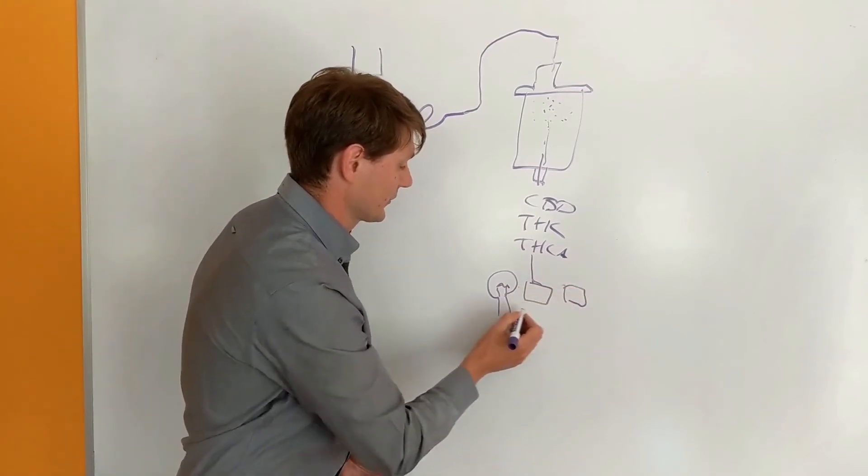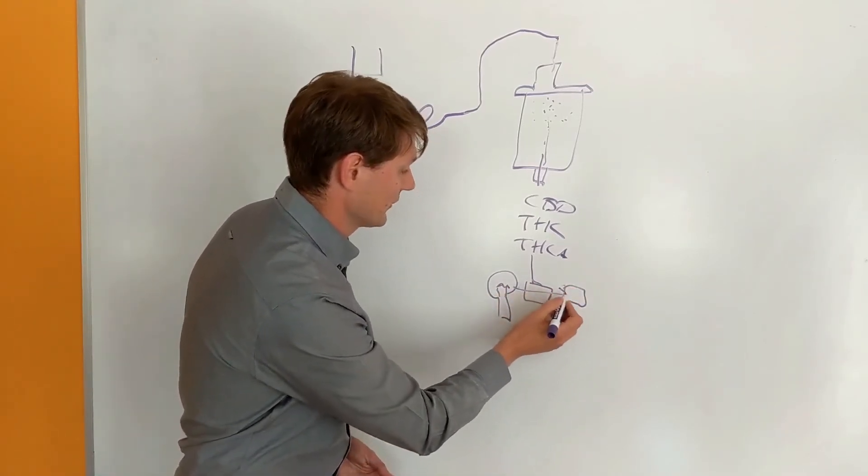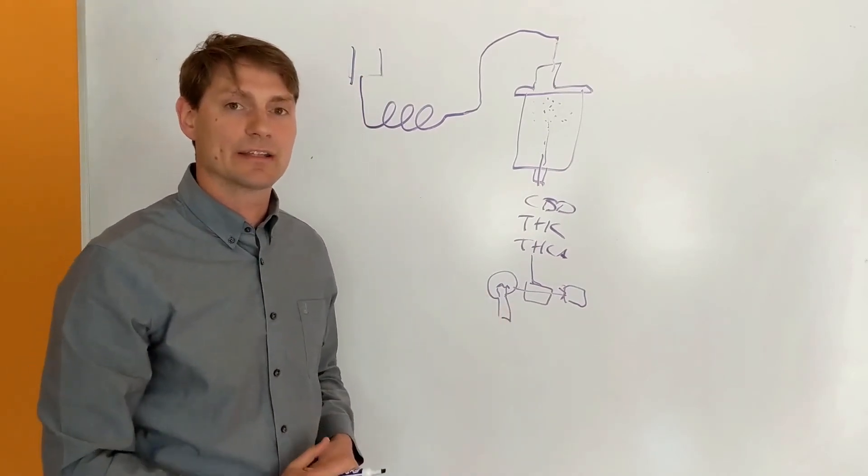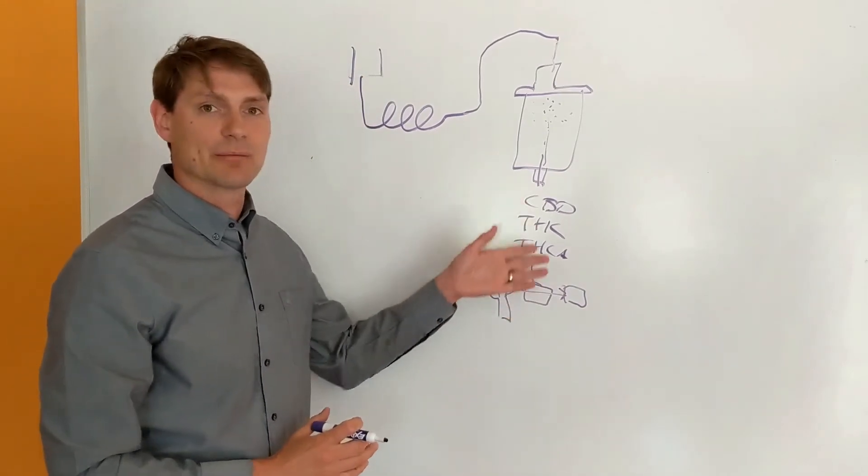And on the other side, there's a detector. So we're shining light through the sample and hitting a detector on the other side. And by doing so, we're able to quantify the amount of each cannabinoid coming through.